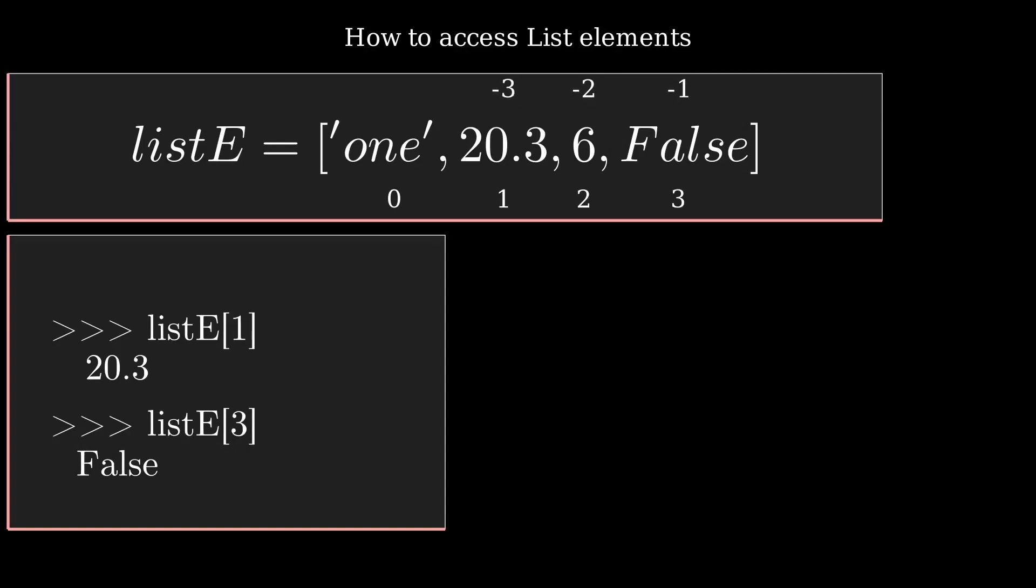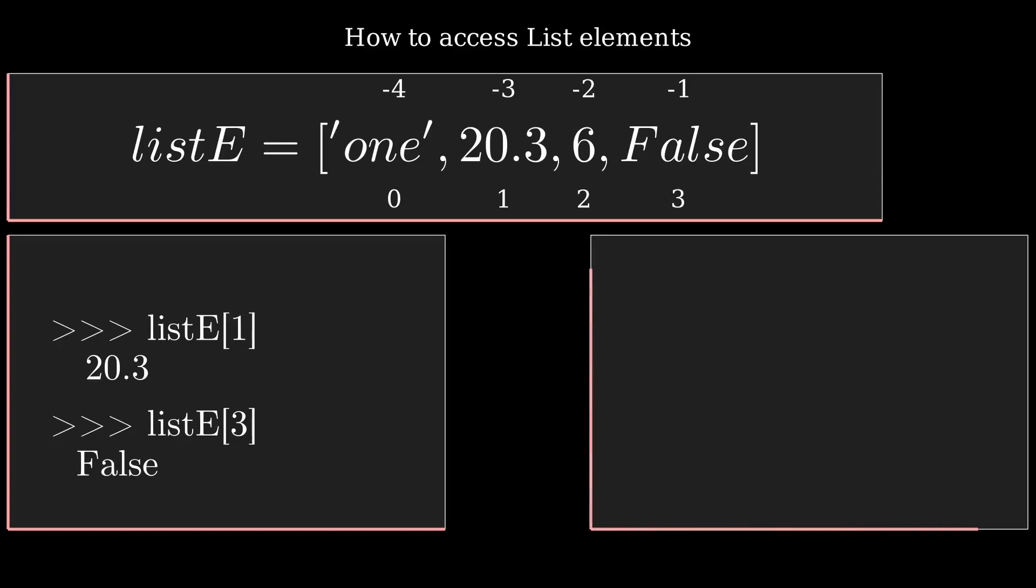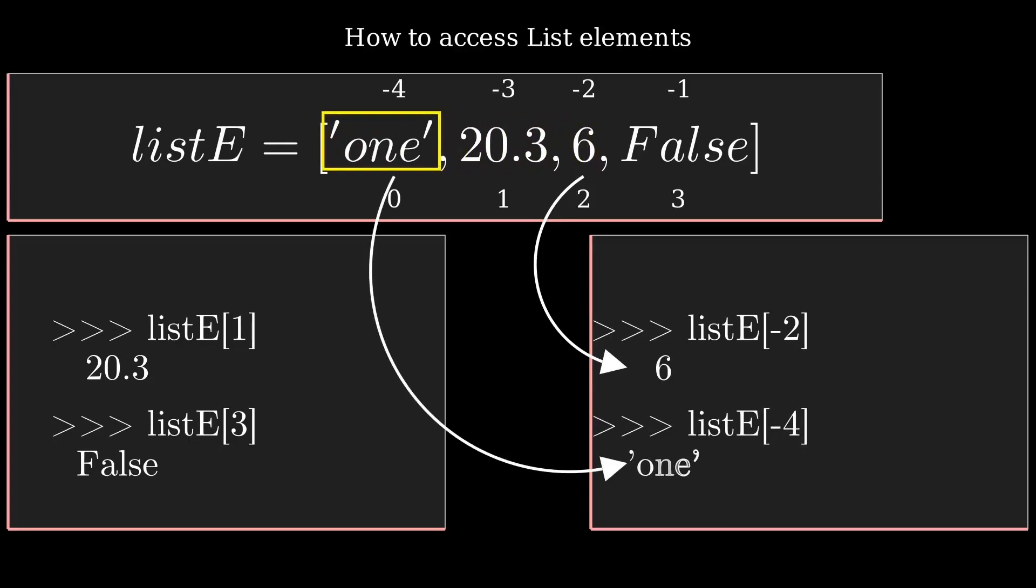You can also access list elements using negative indexes. The last element of the listE variable will be assigned with minus one, and the first element will be assigned with minus four. If you want to fetch any element using negative index, pass that negative index in square brackets. Minus two will fetch the third element and minus four will fetch the first element.